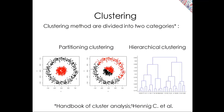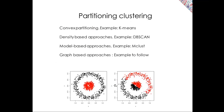According to the handbook of clustering, there are two different types of clustering. Either you do partitioning clustering where you say this is cluster one, this is cluster two, or you can go for clustering algorithms that are hierarchical, where you either start with everything separate and you group things together until you only have one group, or the other way around, you start with everything connected and you disconnect until you only have leaves. These are the two big categories of clustering.